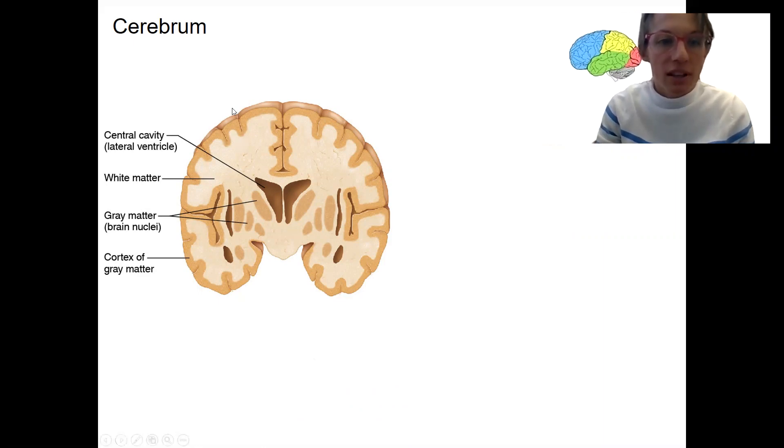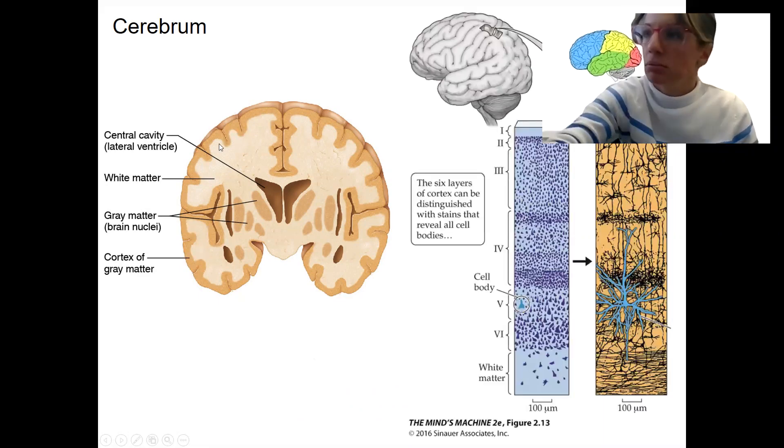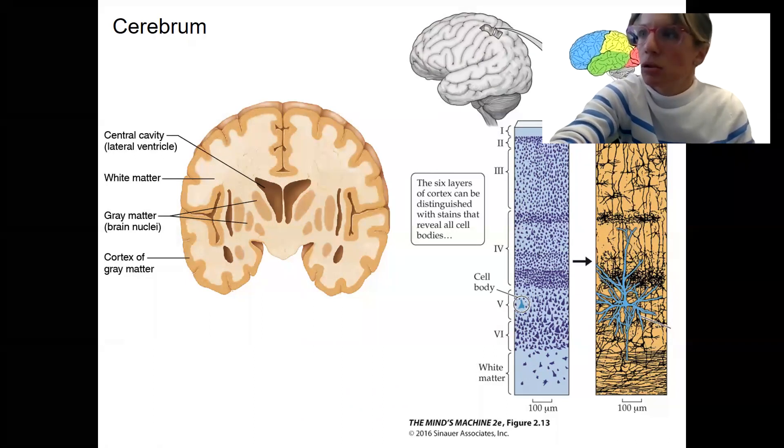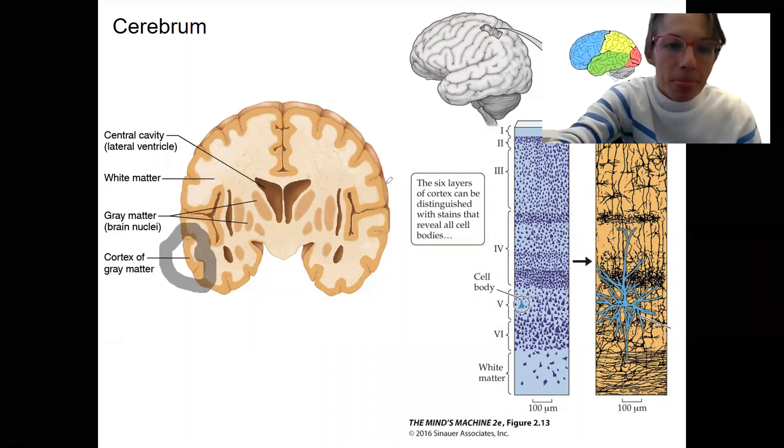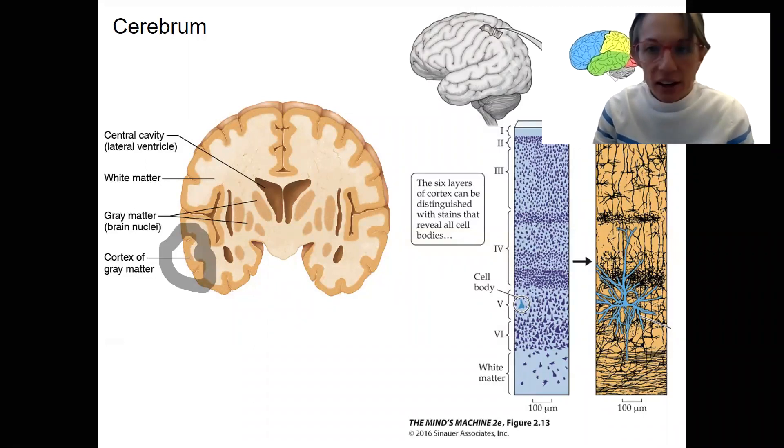So here you can really see the cerebral cortex on the outside as well as the internal nuclei. So here's the cortex on the edge. The white matter is white, right? So that is made up of axons of myelinated axons. We should recognize the white matter, the gray matter, and then the internal gray matter here.